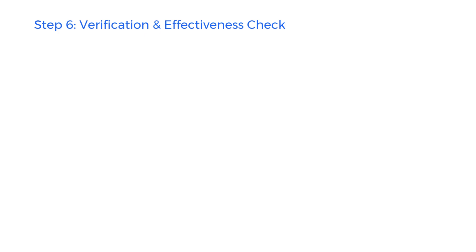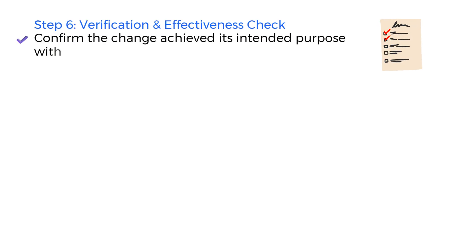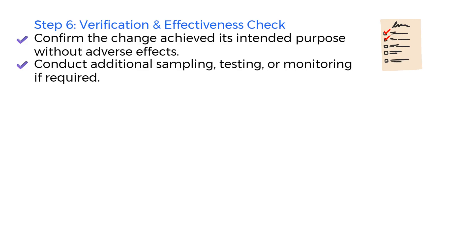Step 6: Verification and Effectiveness Check. After implementation, it's time to ask: did the change work as expected? This step involves reviewing if the change achieved its intended purpose, confirming that no unintended consequences occurred, and conducting additional testing, sampling, or monitoring if needed. For example, if a cleaning agent was changed, additional microbial monitoring might be required to ensure no contamination issues. Only after verifying effectiveness can the change be considered successful.